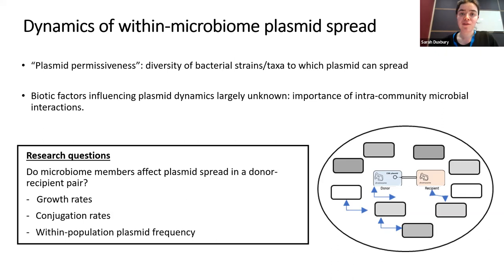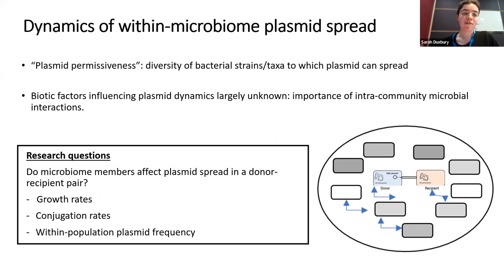The context of my work is understanding the dynamics of plasmid spread within the microbiome. From genomic studies, looking longitudinally at the evolution of bacterial lineages, they can gain multiresistance associated with transfer of plasmids from a coexisting lineage within the same population. Plasmids can spread not only within strains but within a whole community — this has been described in the literature as plasmid permissiveness: the diversity of different bacterial strains and taxa to which a plasmid can spread.